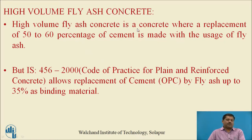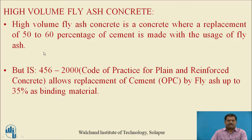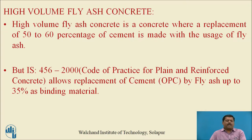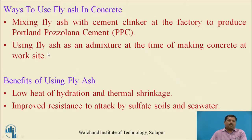High volume fly ash concrete is a concrete where a replacement of 50 to 60 percent of cement is made with fly ash — that is why it is called high volume fly ash concrete. However, IS 456, the code of practice for plain and reinforced concrete, allows only a maximum of 35 percent replacement of cement by fly ash.